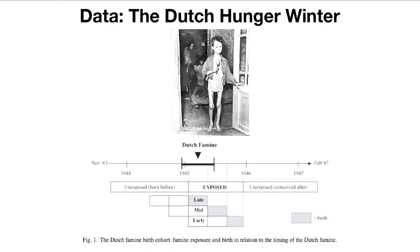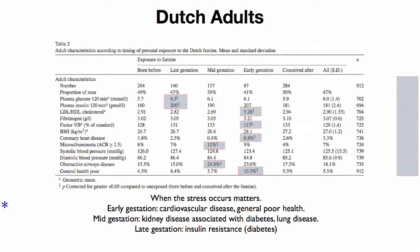The children who were in their mothers' uteri at that point were followed after birth. They were exposed either late in pregnancy, in the middle of pregnancy, or in the first trimester. The outcomes were dramatic, and when the stress occurred was important. If it happened in the first trimester, the result was cardiovascular disease and general poor health. If it happened in the middle trimester, the result was kidney disease, diabetes, and lung disease. If it happened late in gestation, there would be insulin resistance and diabetes. These were picked up in people 50 or 60 years later.